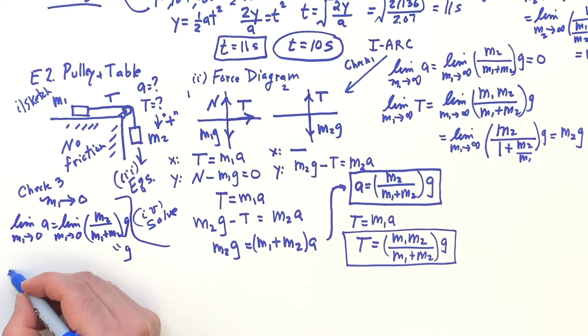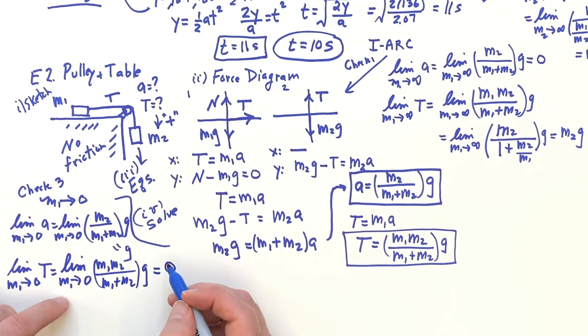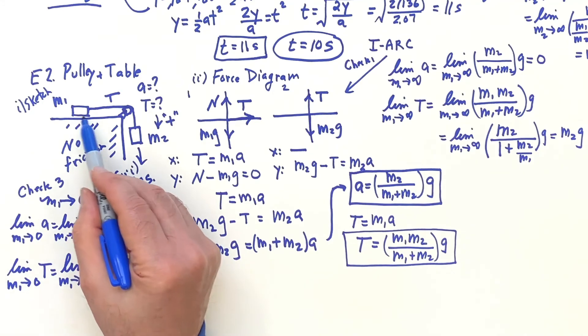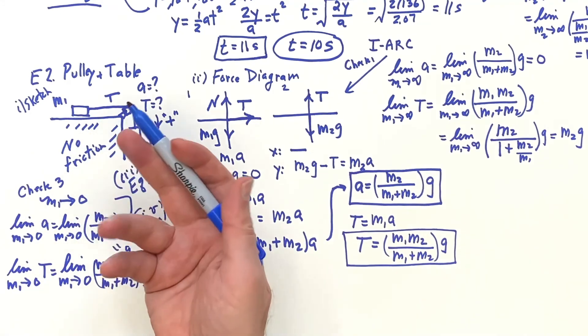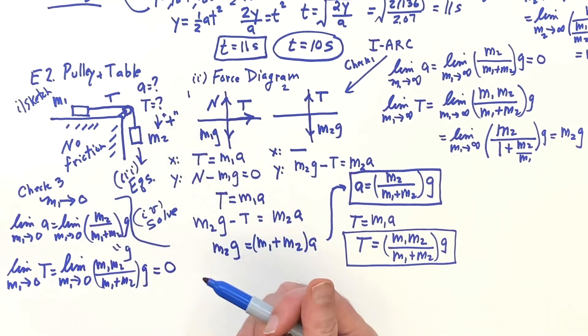And then if we do the limit as M1 goes to 0 on the tension, just to cover all the cases. So, the tension is M1 M2 over M1 plus M2 G. If M1 goes to 0, you get 0. In other words, you're pulling nothing. So, basically, the rope is slack as M2 is like falling down. That's cool.